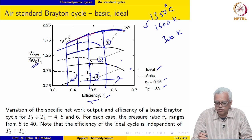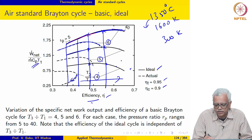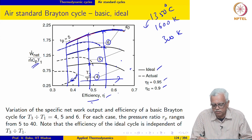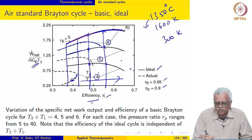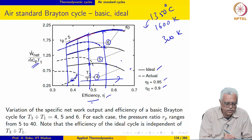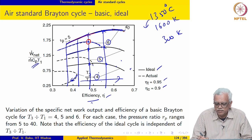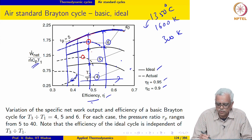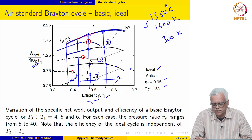Efficiency reaches a maximum for certain values; for T3 over T1 equal to 4, efficiency begins to decrease at higher values of Rp. If you look at specific work, again you can see that it reaches a maximum and then begins to decrease. Here it is more or less flat, but you can see that it reaches a maximum and then begins to decrease with Rp.